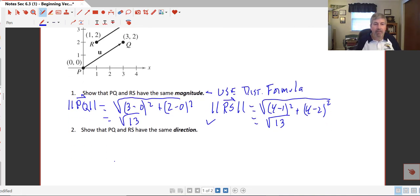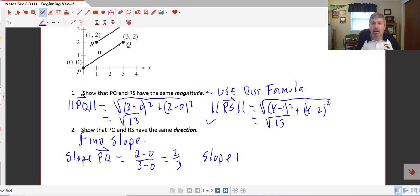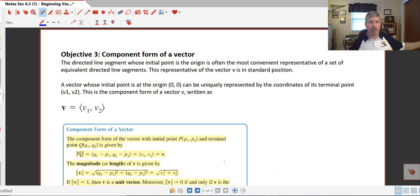Now in order to show that they have the same direction, we will use the slope. So we'll just find the slope of those, see that they have the same pitch, or the same steepness. So the slope of PQ is simply our rise over our run, or our change in Y over our change in X. So 2 minus 0 over 3 minus 0, and we get 2 thirds, and our slope of vector RS is equal to 4 minus 2 over 4 minus 1. And again, we get 2 thirds. So these two vectors have the same magnitude and direction.